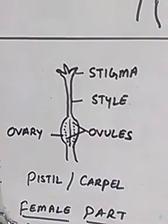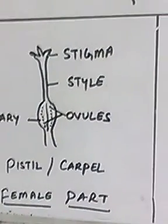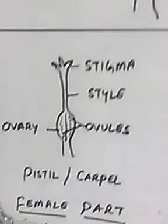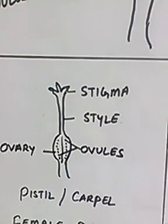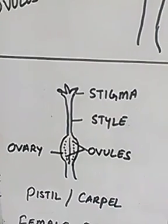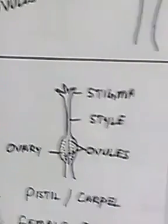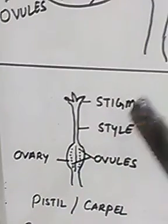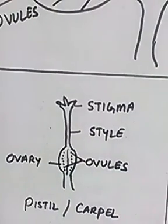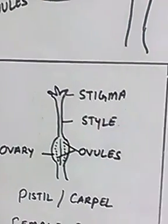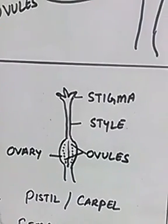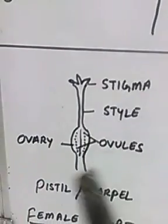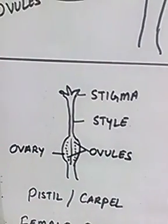This central part of the flower is called pistil or carpel, and it is the female part of the flower. In the center of the flower rises a flower-shaped structure called pistil or carpel — this is the female reproductive part of the flower. The sticky top portion of the carpel is called the stigma, and the style connects the stigma and ovary.